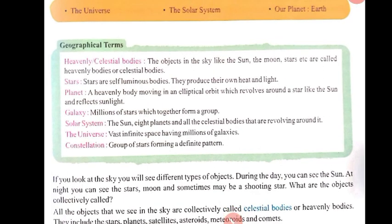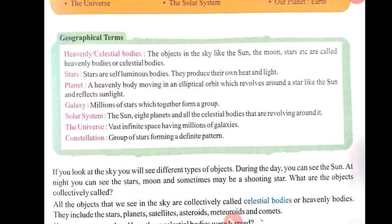Here you can see some geographical terms. These terms are: heavenly celestial bodies, stars, planet, galaxy, solar system, the universe, and constellations.